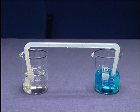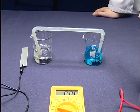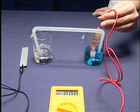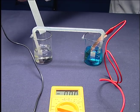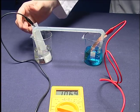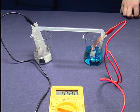Salt bridge including solution of potassium sulfate salt is dipped into the solution. Copper electrode is dipped into the copper sulfate solution while zinc electrode is dipped into the zinc sulfate solution. Voltage is observed by multimeter.